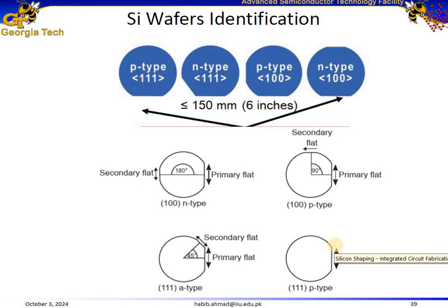In conclusion, the primary and secondary flats on silicon wafers are critical for identifying their crystal orientation and doping type. This mechanism is important for manufacturers during semiconductor device fabrication, as different orientations and doping types affect the electrical properties and behavior of the wafers.